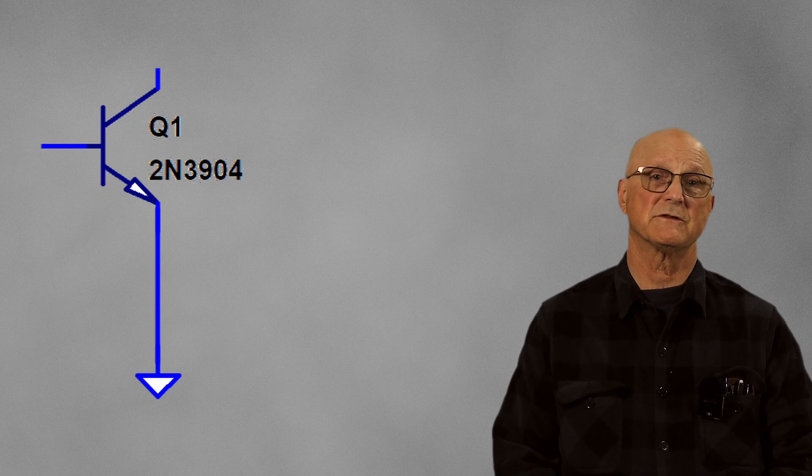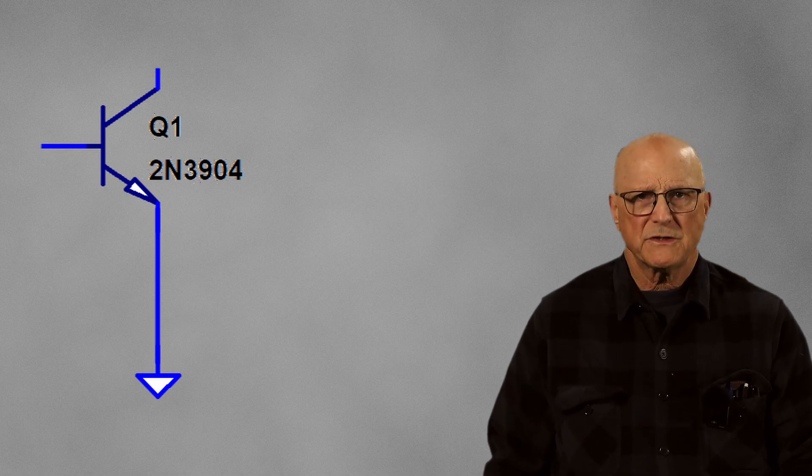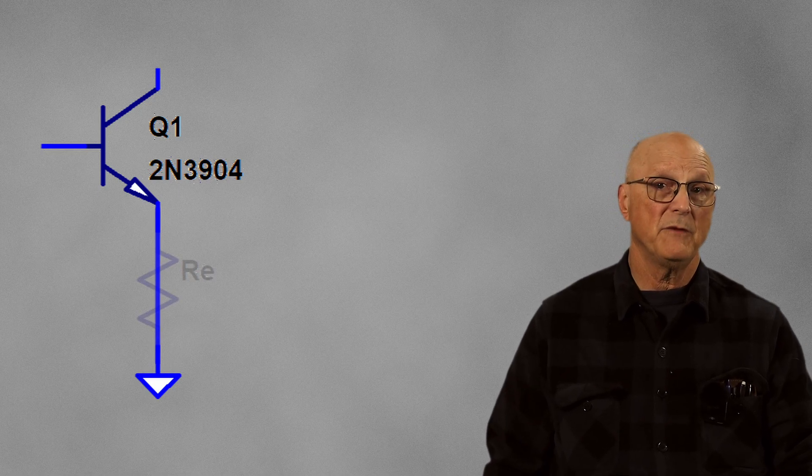So what am I going to do to fix this? What we need is some sort of way to make this circuit more impervious to the changes in the transistor's current gain. The traditional way to do this is to add an emitter resistor.